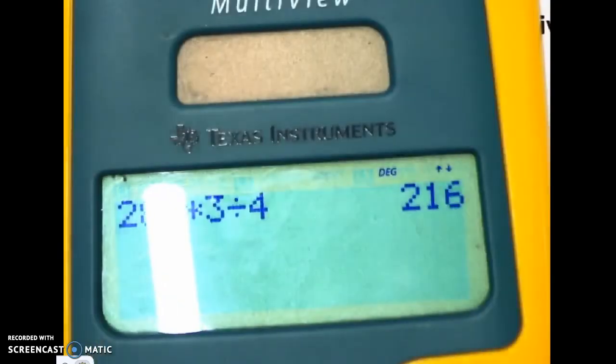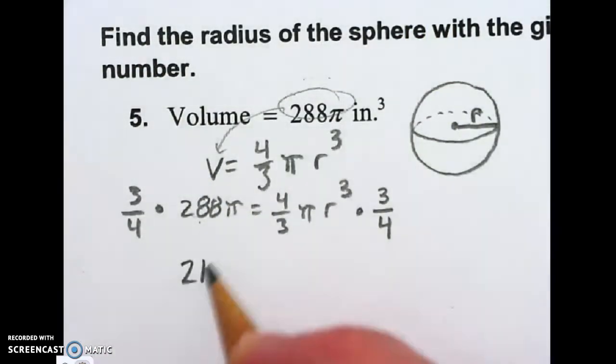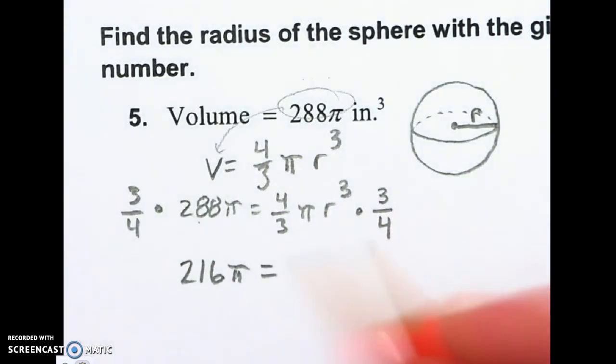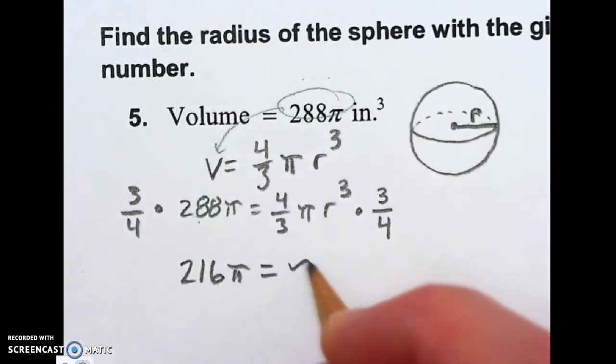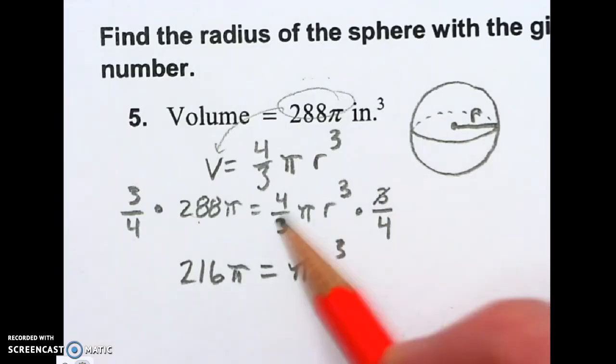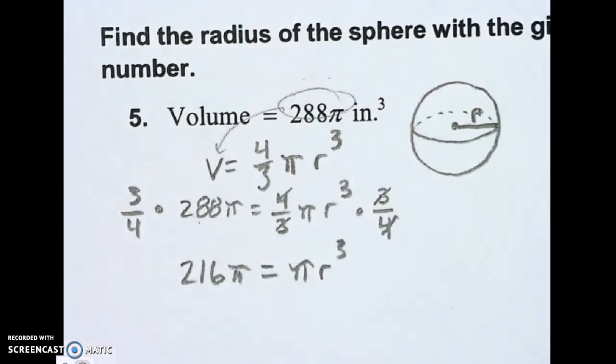That's timesing it by 3 fourths. And I get 216. So this is 216π. I just left the π off the calculator because it hadn't been multiplied in. So it's fine to leave it there. And now I have equals π and R cubed. Notice the 4 thirds went away because we multiplied by 3 over 4. The 3 times been divided. The 4 times been divided. They canceled out.